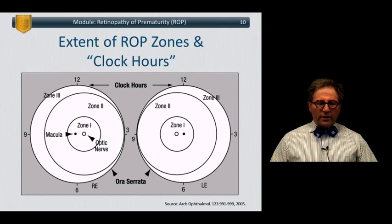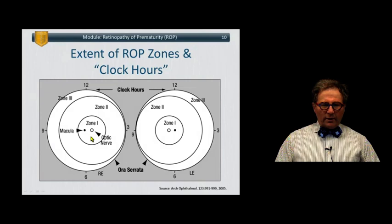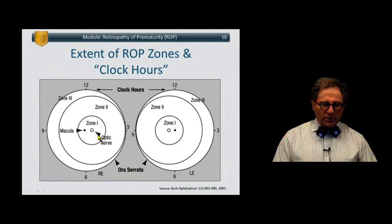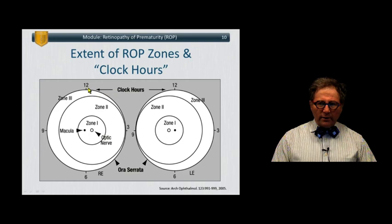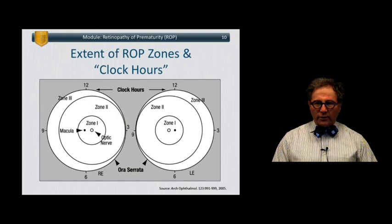On this slide, we can see the right eye and the left eye showing the zones. Zone 1 is immediately around the optic nerve and macula. Zone 2 covers the majority of the rest of the surface area, and zone 3 is at the perimeter. Using clock hours, we can define the area of the retina involved and determine exactly where any retinal detachment may be occurring, whether unilaterally or bilaterally.